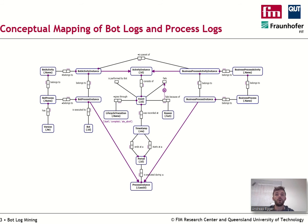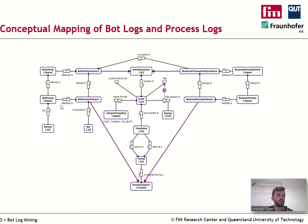The ORM model describes the structure of bot and business processes along with attributes needed to effectively merge bot logs and process logs. For example, a bot process consists of bot activities which are identified by a name, and an instance of a bot process is a bot process instance executed by a specific bot with an identifying ID.